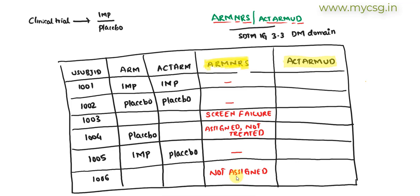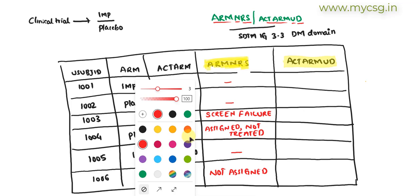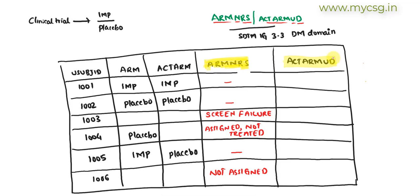Now let's look at ACTARMUD, which is meant for describing the unplanned actual ARM. For subject 1001, actual ARM is not different from ARM, so this variable has no meaning and is left null. For subject 1002, both are placebo and equal, so again ACTARMUD is null.